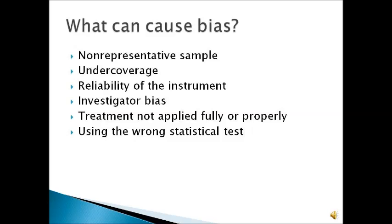Also, undercoverage can cause bias. Undercoverage is when a certain segment of the population is underrepresented in the sample. So even if we have a simple random sample of all seniors at Graterford, it could turn out that we didn't survey a single person from the cosmetology shop, and that could result in undercoverage.